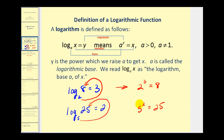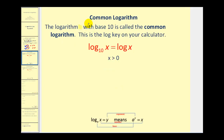We'll come back to this idea later, but let's talk about common log and natural log, because these are the two logs you'll find on your calculator. The logarithm with base 10 is called the common log — this is the log key on your calculator. If it's base 10, we leave the base off.